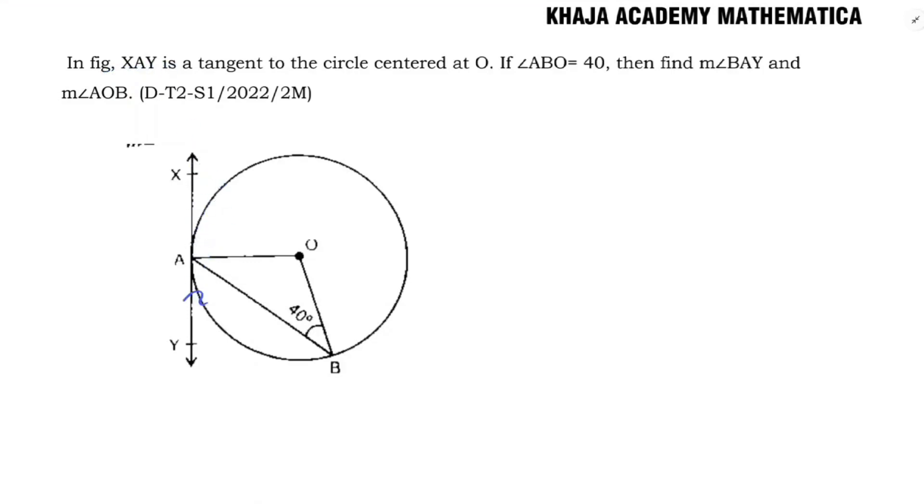In figure XAY is a tangent to the circle centered at O. If angle ABO is 40 degrees, find the measure of angle BAY and angle AOB. We need to find these two angles. So first,